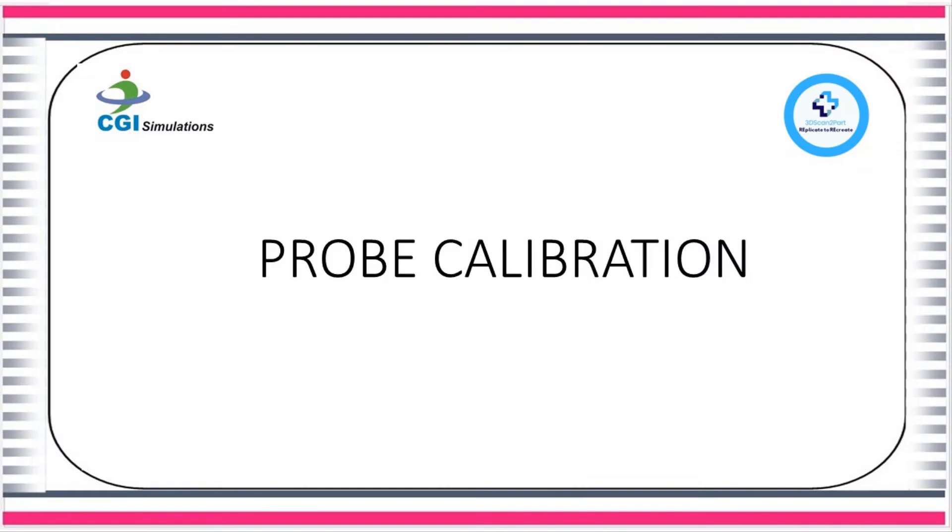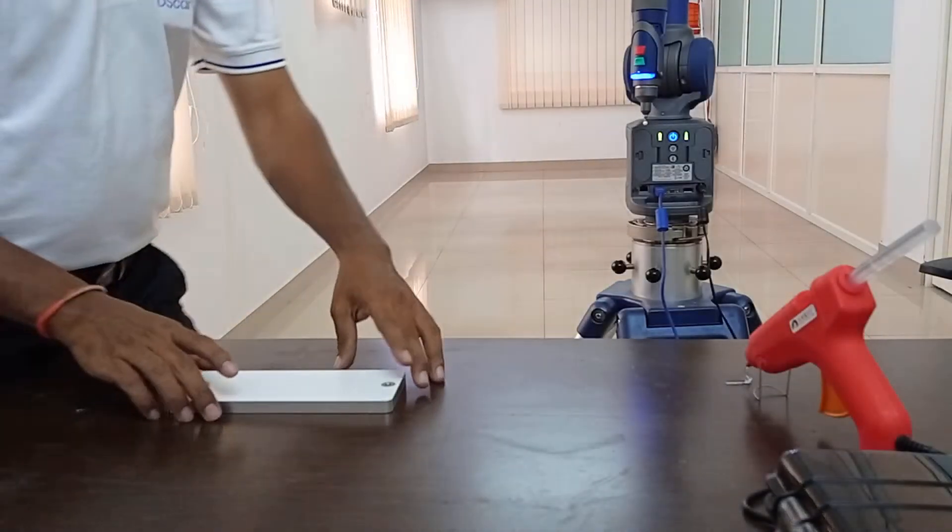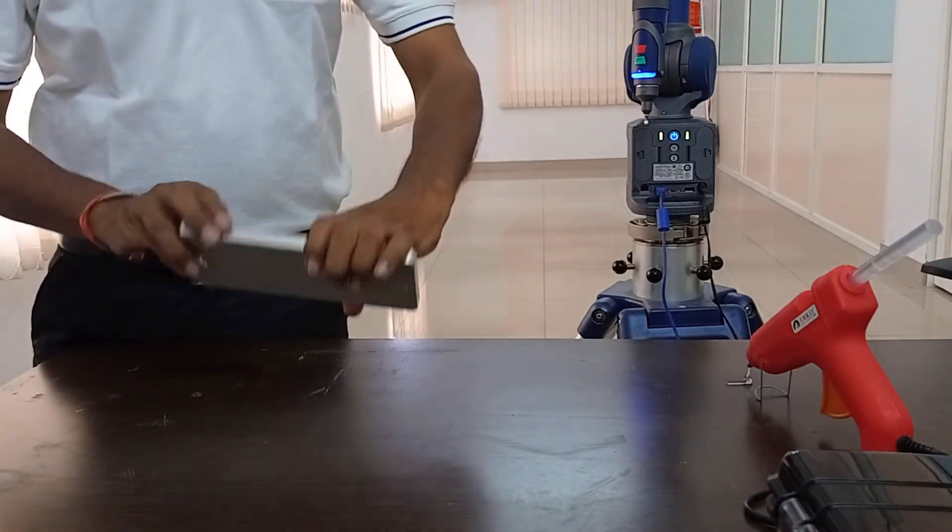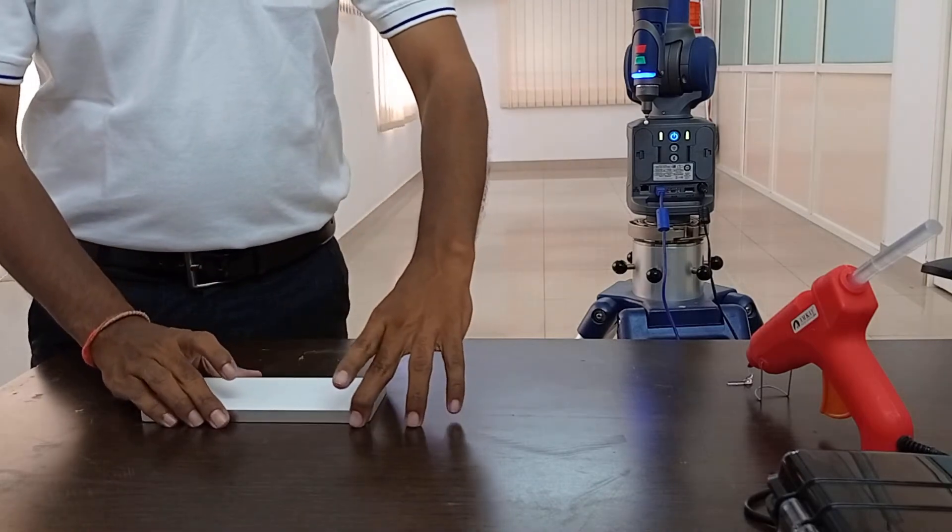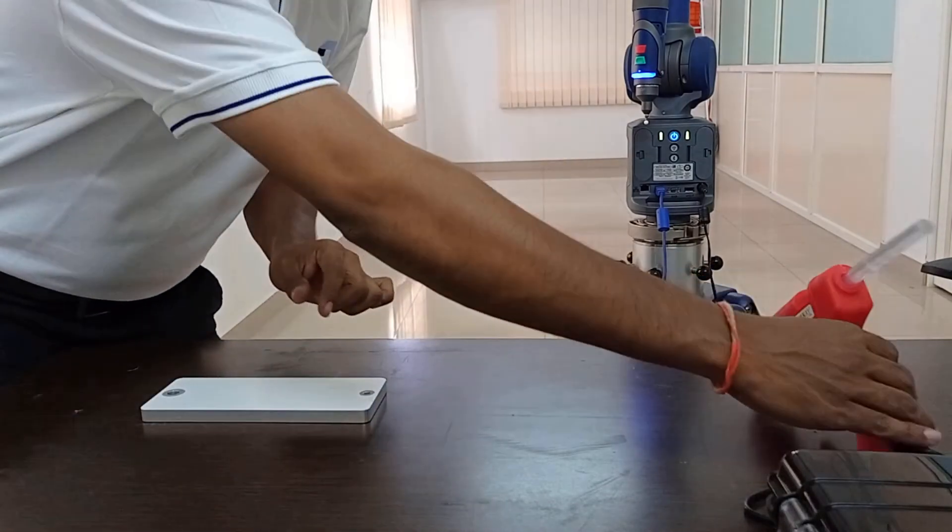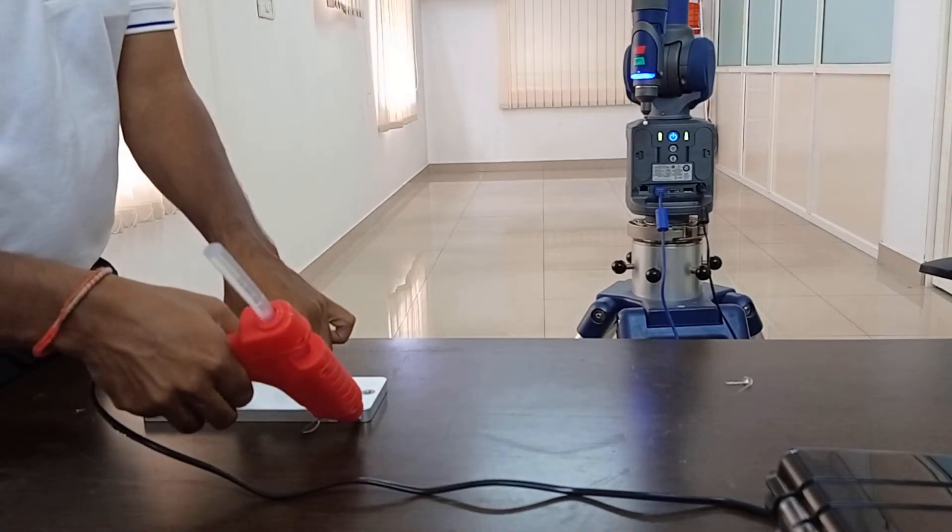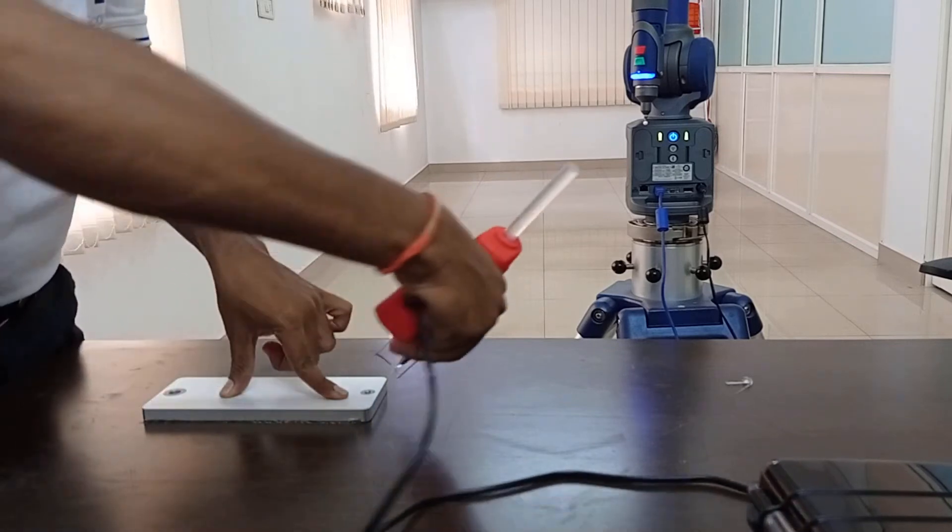Before starting any inspection project we should always compensate the probes so that we get the accurate results. Before using the calibration or compensation plate assure the underside of the plate and the surface it will be placed on are clean and free of any debris. We are using glue gun to stick the calibration plate to the surface. Any component that has to be inspected should be rigidly fixed to the surface.